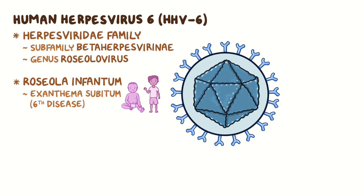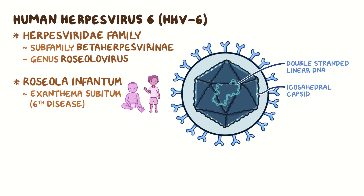Human herpesvirus 6 is a double-stranded linear DNA virus surrounded by an icosahedral capsid, which is a spherical protein shell made up of 20 equilateral triangular faces. The capsid is covered by a protein layer called tegument and enclosed in an envelope, which is a lipid membrane that contains viral glycoproteins and is acquired from the nuclear membrane of host cells.